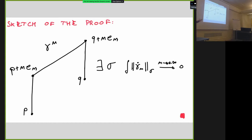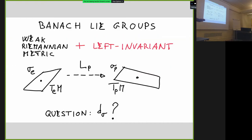Let me sketch the idea of the proof to show the simplicity of the example. You fix two points p and q on l², and you consider the following sequence of curves γ_n joining the two points. These curves are very simple: they are obtained by concatenating three line segments, where e_n is the standard basis vector of l². What we proved is that there exists a weak Riemannian metric σ such that the length of these curves goes to zero, so by definition the geodesic distance between any two points is zero. The formula for the Riemannian metric is not complicated once you have this curve in mind.